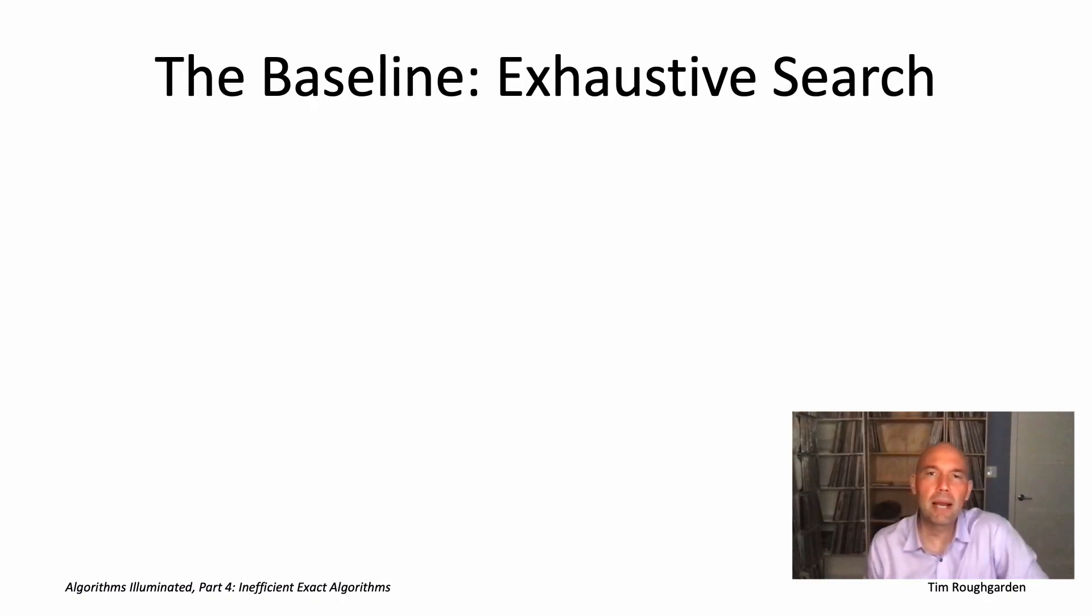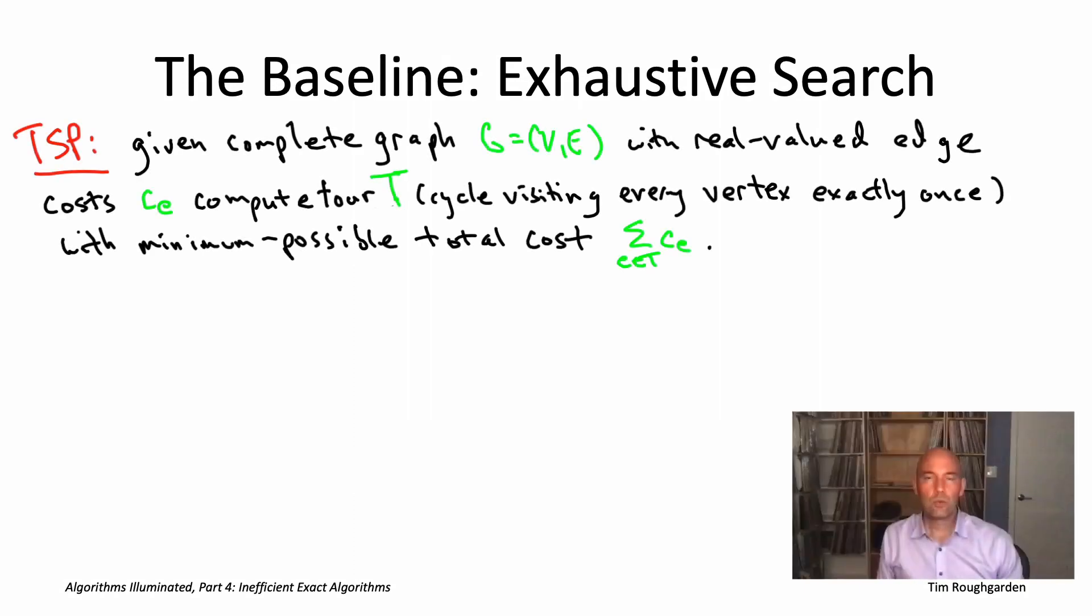Let me begin by quickly reminding you about the definition of the traveling salesman problem, plus how long it takes to solve it using exhaustive search. In the TSP, the input is a complete graph on some number n of vertices. Each of the n-choose-two undirected edges is in the graph, and each has a real-valued cost, denoted C_E. The goal is to compute a traveling salesman tour. That means it's a cycle that visits each vertex exactly once. So it starts somewhere, and in n-1 hops, it visits all the rest of the vertices, and finally comes back to where it began. Among all the tours, you'd like to find the one that minimizes the sum of the edge costs. That's the TSP.